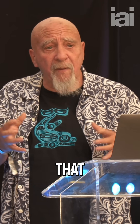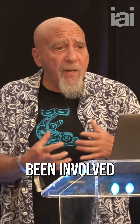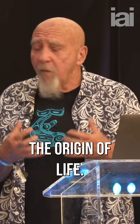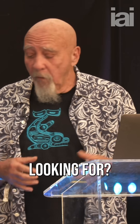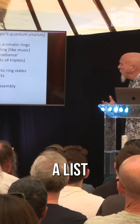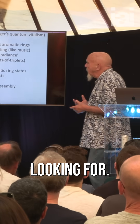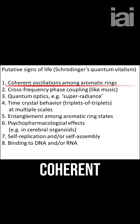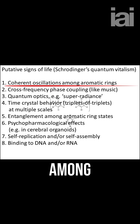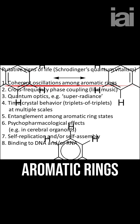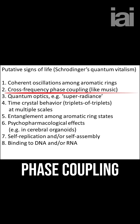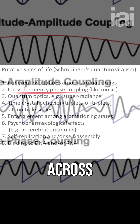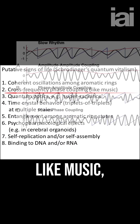So what are we looking for? If we look at a molecule from an asteroid that might have been involved in the origin of life, what are we looking for? Here's a list of things we could be looking for: coherent oscillations among aromatic rings, phase coupling across frequencies like music.